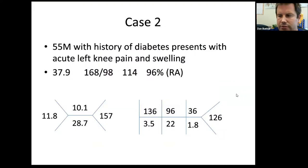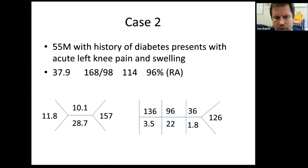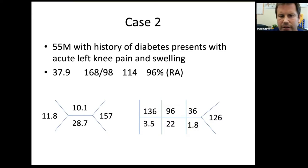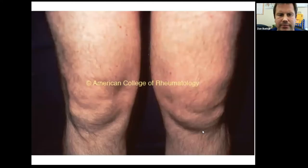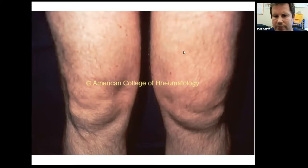Case number two: a 55-year-old male with a history of diabetes presenting with acute left knee pain and swelling. He has a temp of 37.9, is hypertensive, a little tachycardic. His labs are basically the same as the previous patient — a little bit of a white count and a mildly elevated creatinine, which is his baseline. This is what a knee effusion looks like.